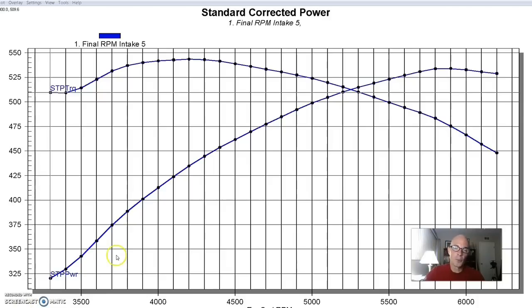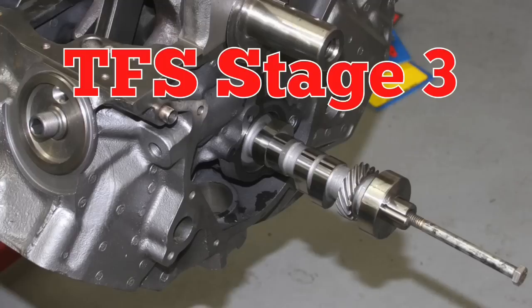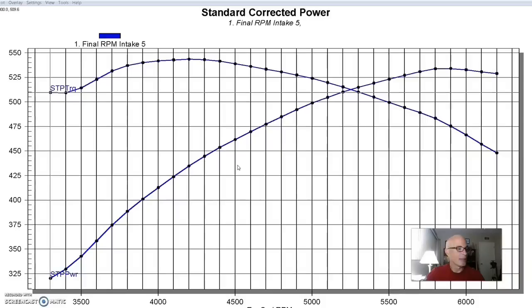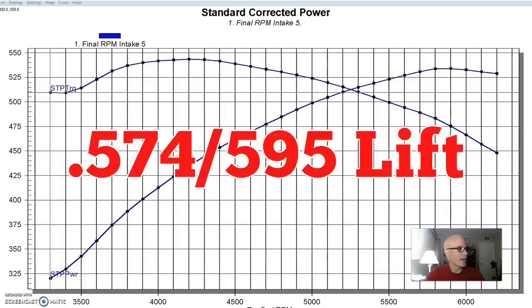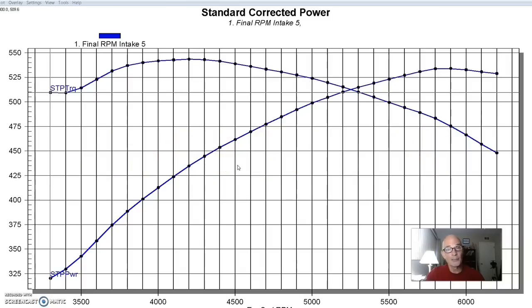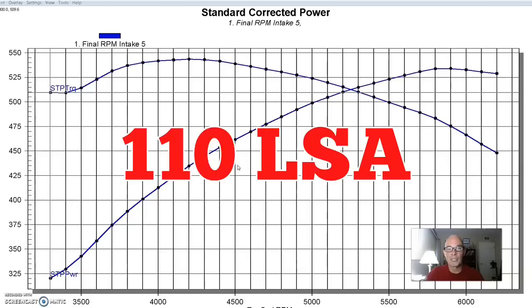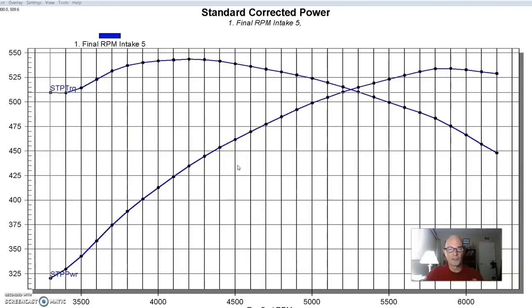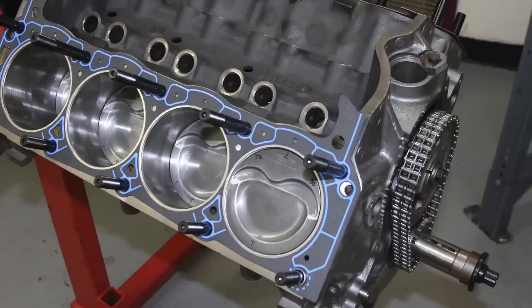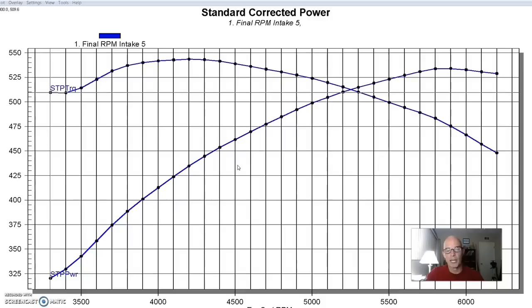So we first equipped this with a TFS Stage 3 camshaft. And that Stage 3 cam was a 574-595 lift split, so it had good lift, and it could take advantage of what those heads had to offer. It was a 236, 248-degree duration split, 110-degree lobe separation angle. We secured all this stuff together with Felpro gaskets, obviously, and ARP head studs. I like using the ARP stuff, especially for head studs. They work really well.